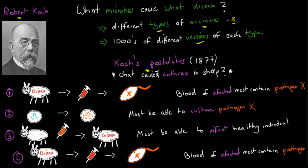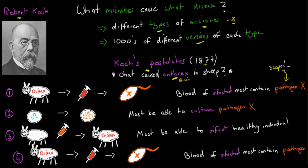That's where Koch's postulates came into play, developed by Robert Koch in 1877 by looking at what caused anthrax in sheep. He suspected a certain bacteria was causing the disease and used four steps to confirm it. The first step: go to an infected animal and confirm that the suspected pathogen is present in its blood. He took a diseased animal, took its blood, and checked under the microscope — yes, the suspect pathogen was there.